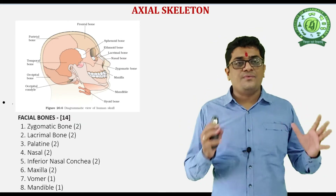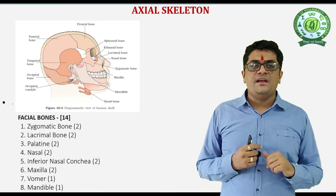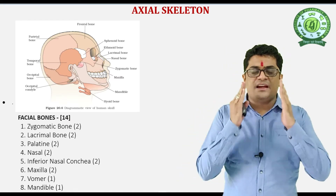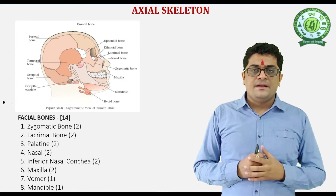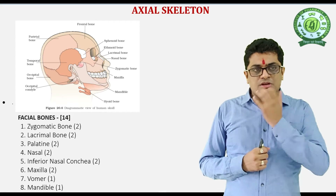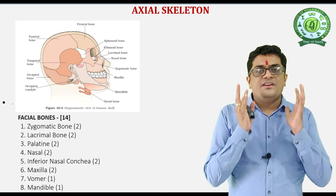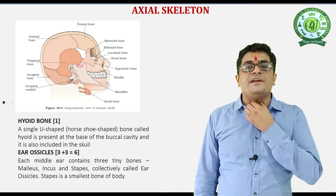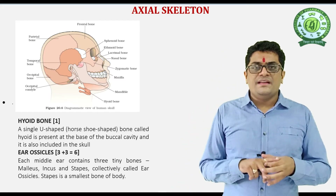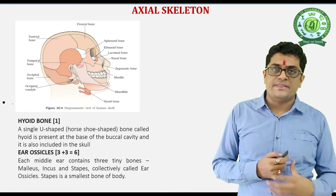The facial bones number 14: 2 zygomatic bones, 2 lacrimal bones, 2 palatine bones present in the palate, 2 nasal bones at the dorsal part of the nasal cavity, 2 inferior nasal bones at the lateral side of the nasal cavity, 2 maxilla, 1 vomer (present just below the ethmoid), and 1 mandible. These 14 bones are responsible for the structure of the face. The hyoid bone is present at the basal part of the buccal cavity; it is U-shaped and protects the trachea and esophagus. The muscles of the tongue attach to the hyoid bone, which is why the tongue is a skeletal muscle.